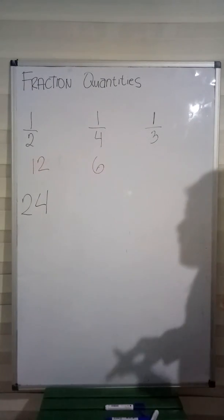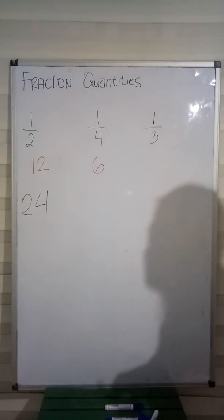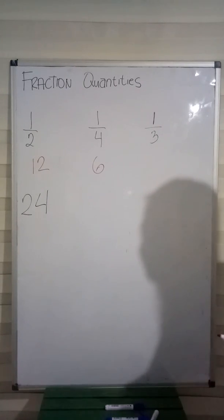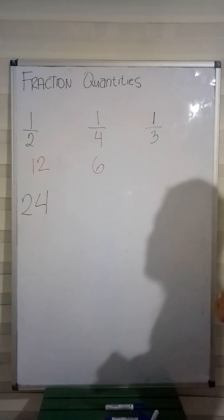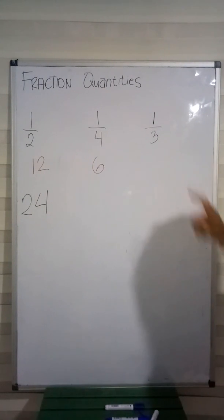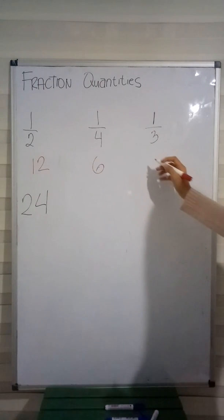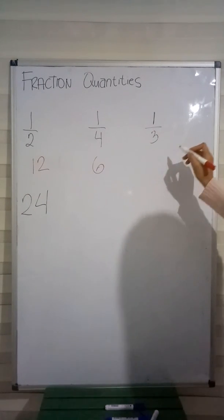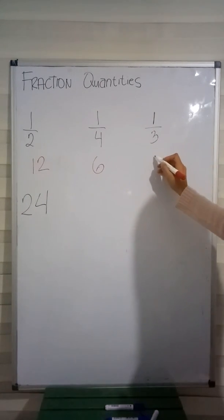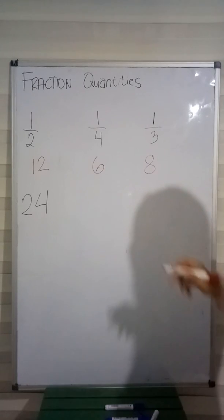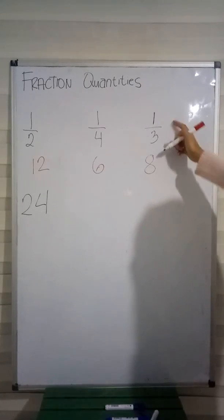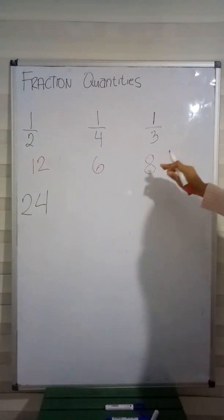And for the third fraction, we have 1 third. Here, our denominator is 3. So therefore, we are going to divide 24 by 3. So, 24 divided by 3 is 8. Therefore, 1 third of 24 is 8.